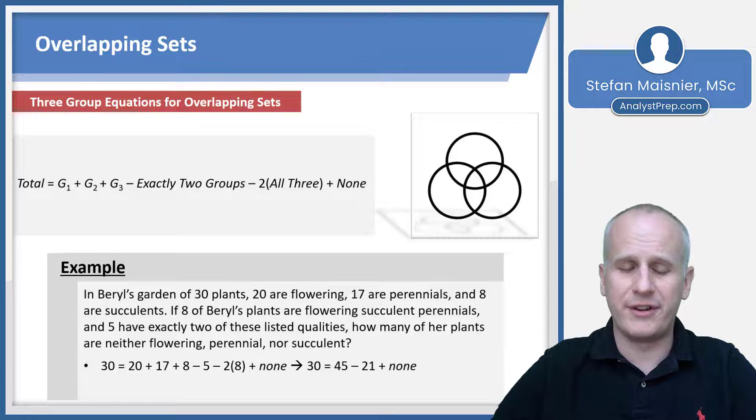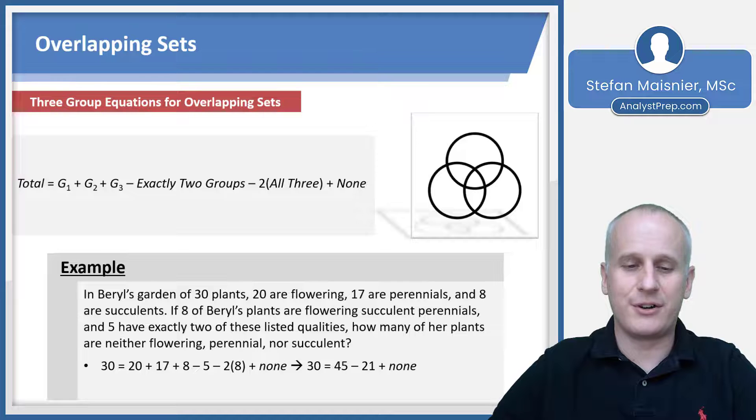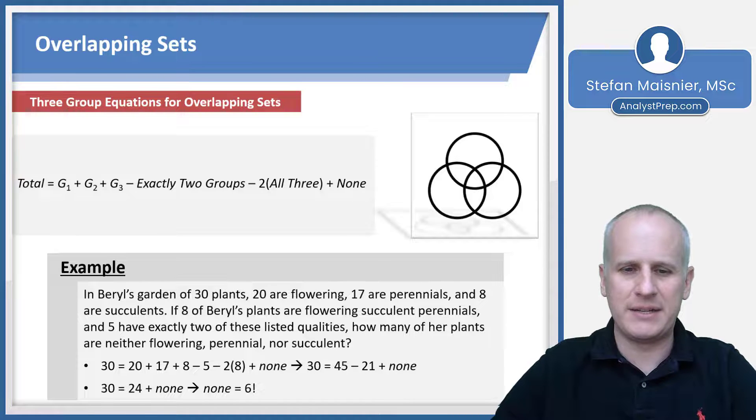And of course we're trying to solve for the none. So we'd have 30 and then we just process the math. 20 plus 17 is 37. 37 plus 8 is 45. 45 minus 5 is going to be 40 and 40 minus 16 is going to be down to 24 and 24 plus none is going to equal that 30 and none is going to be six.